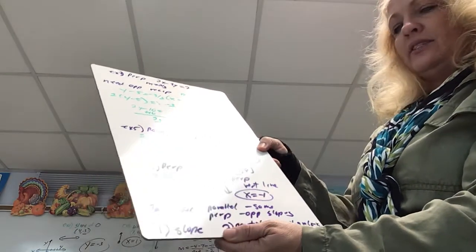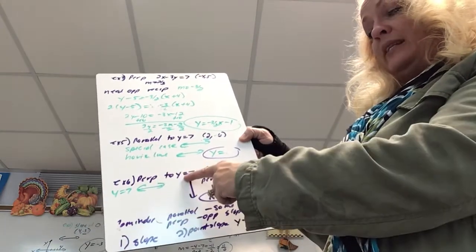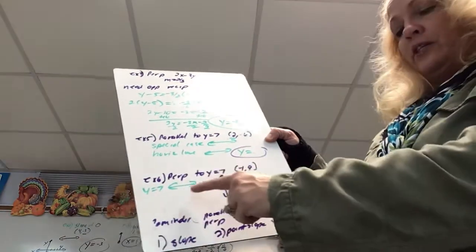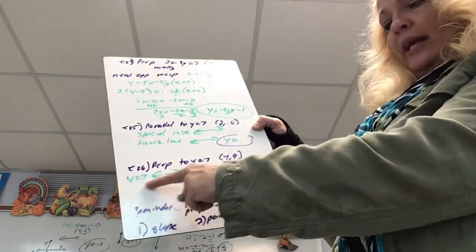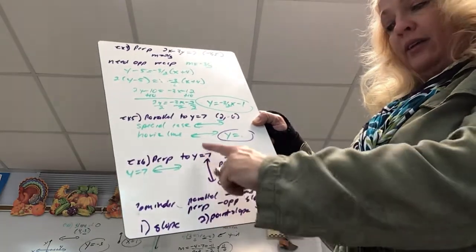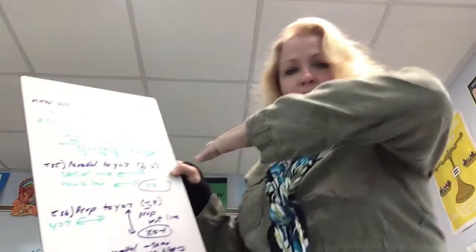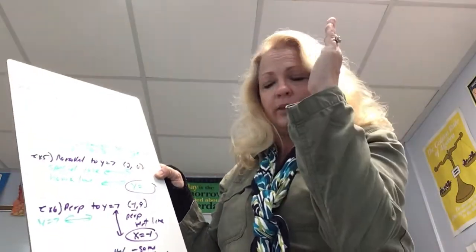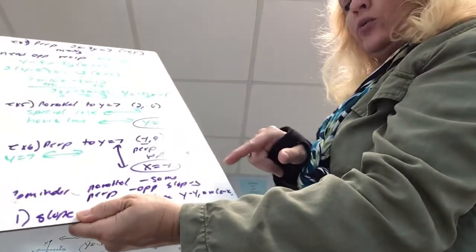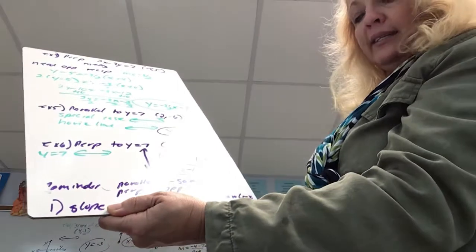Example 6: write an equation of a line perpendicular to y equals 7, same starting line but now perpendicular. Here's y equals 7. A line perpendicular to a horizontal line has to be a vertical line. So it's a special case — a vertical line — and it's x equals the x-coordinate of the given point. The x-coordinate is negative 1, so x equals negative 1.